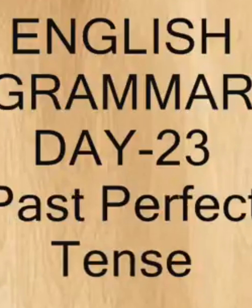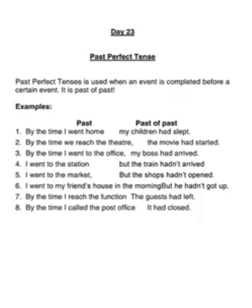Day 23 - Past Perfect Tense. This is one tense which many people find confusing. They don't know when to use simple past like 'I went' and when to use 'I had gone,' which is past perfect tense. It's actually very simple: past perfect tense is used for any sentence which names a past of a past. The structure is: subject + had + V3 + object. Past perfect tense is used when an event is completed before a certain event in the past.